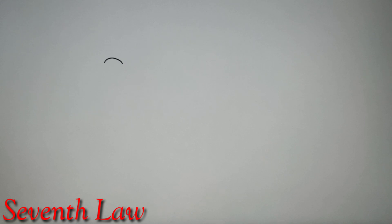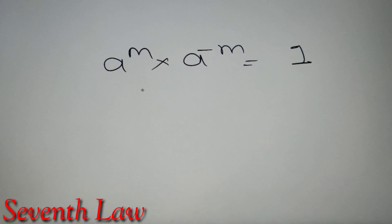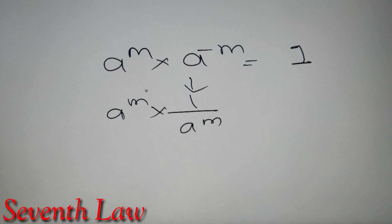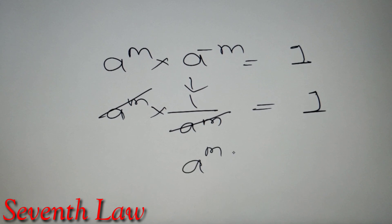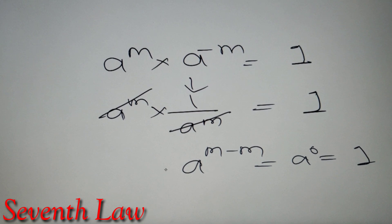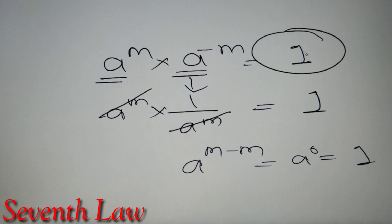The seventh law says that if we have A raised to power M multiplied by A raised to power minus M, the result equals 1. We can write A to the power minus M as 1 by A to the power M, and the same terms cancel, giving 1. Alternatively, using the second property, M plus minus M equals 0, so we get A to the power 0 which is also 1. Either way, the product of A to the power M and A to the power minus M always equals 1.